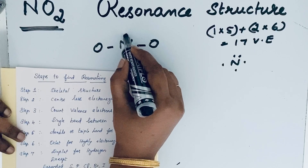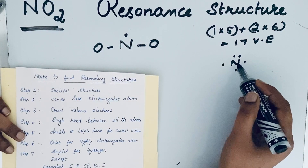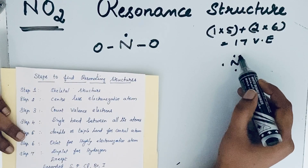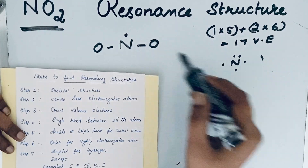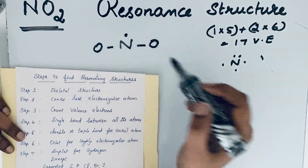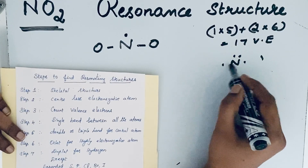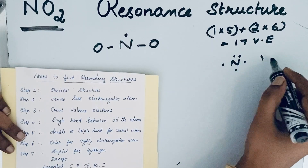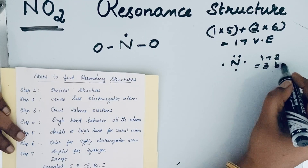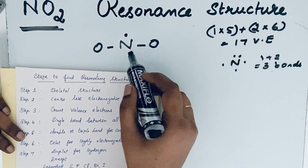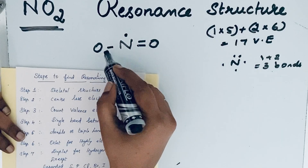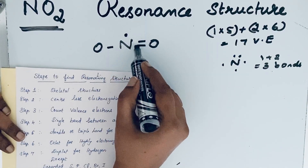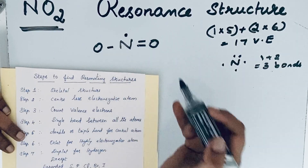The one odd electron is placed on top of nitrogen. Now let us see how many bonds nitrogen can form. One lone pair can be used as a dative bond, giving one dative bond. The odd electron accounts for one, and the remaining two electrons can form covalent bonds — so one plus two gives three total bonds for nitrogen in NO2. We already have two bonds, so we draw one more, giving one dative bond, one odd electron, and two covalent bonds.